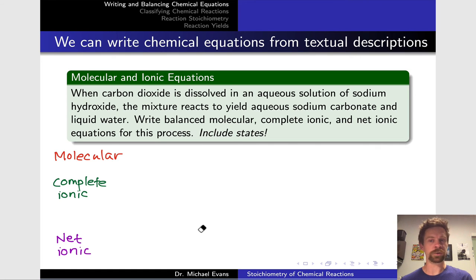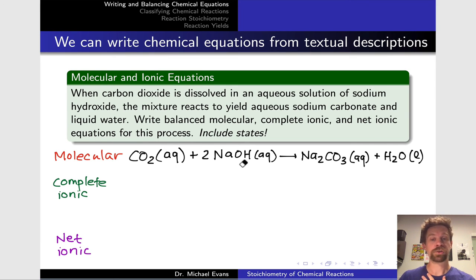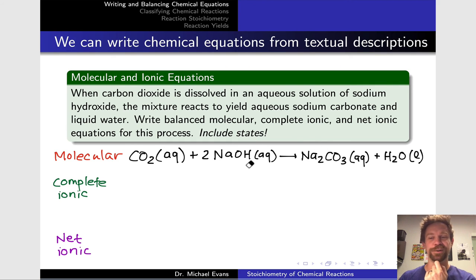Starting with the molecular equation, we translate each chemical name into a formula. Carbon dioxide is CO2, sodium hydroxide is NaOH, sodium carbonate is Na2CO3, and water is H2O. To balance this equation we need two NaOH for every one CO2. Checking the balance: four oxygens on the left (two and two), four oxygens on the right; one carbon on each side; two sodiums on each side; and two hydrogens on each side. Everything's balanced.